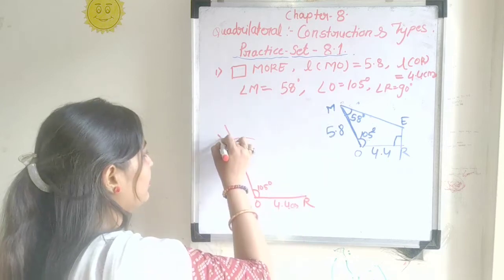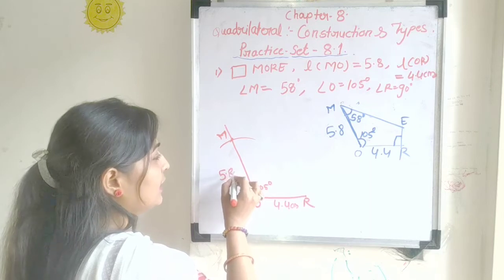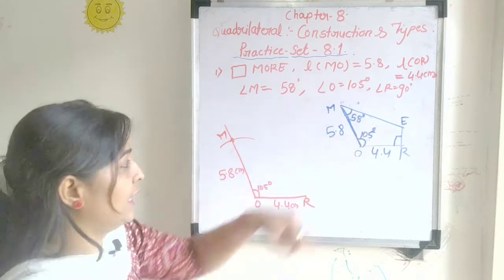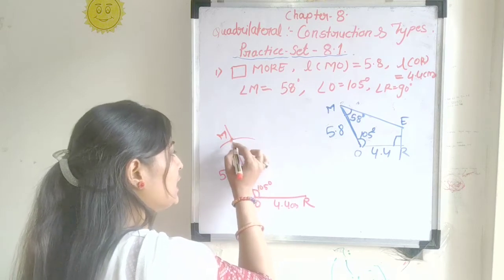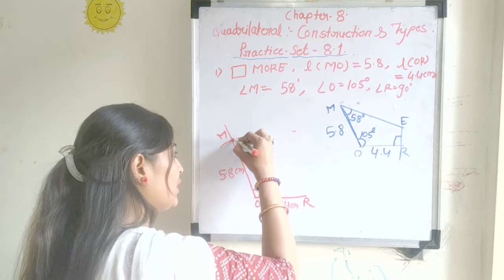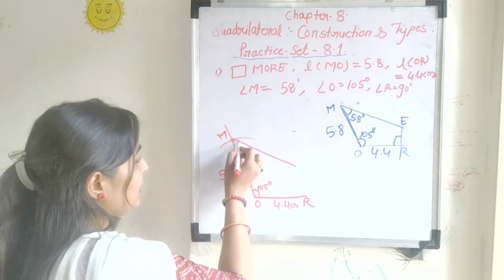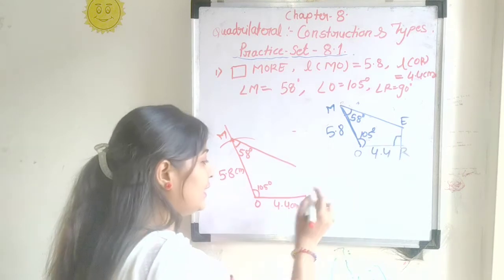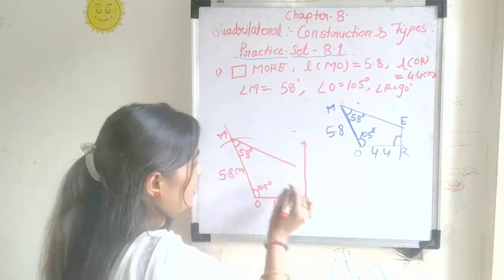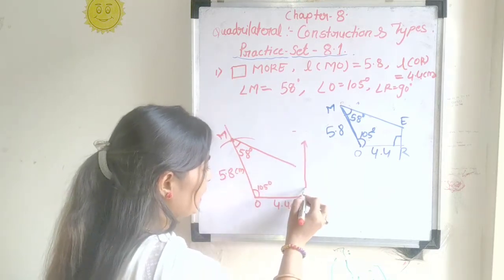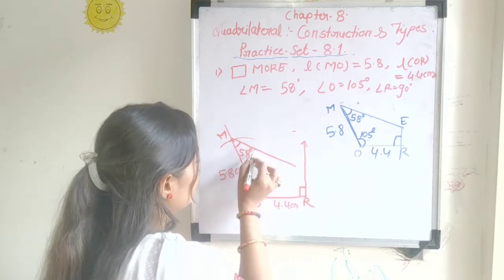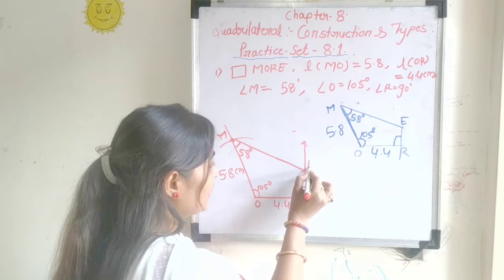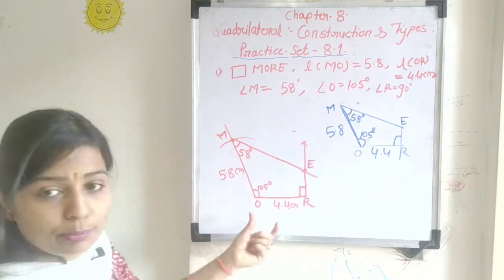This gives us point M at 5.8 cm. Now the measurement of angle M is 58 degrees, so we place the protractor at M and draw the angle M to 58 degrees. Next, at point R we draw the protector straight for angle R at 90 degrees. The two lines from M and R will intersect, and that intersection point is point E.